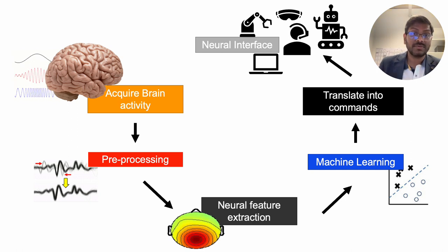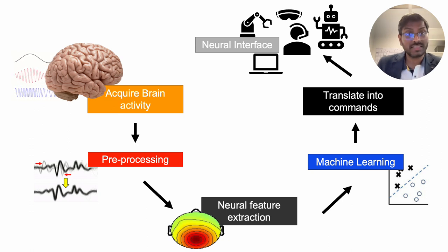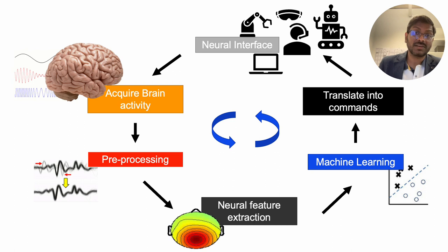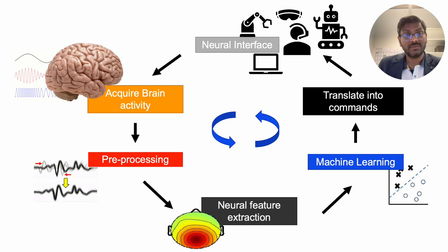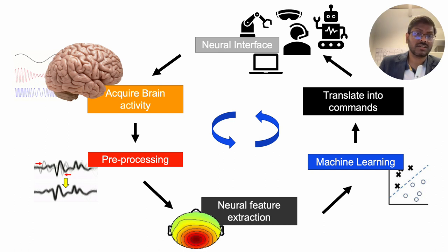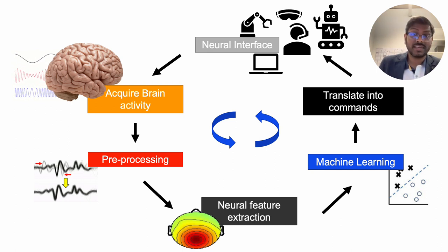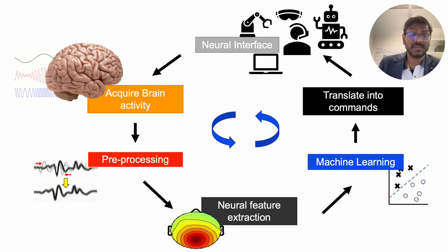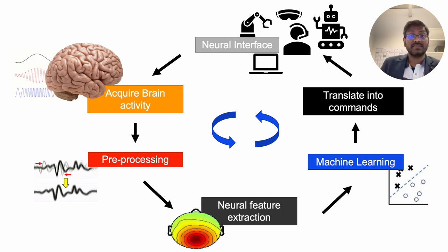Once you know that label or classification — stress in this example — you can translate it into an interface: controlling a robot, controlling a computer, AR/VR glasses, a microphone, headphone, or really anything. When you do that, you are also watching those actions, so it becomes a closed-loop interface. This is how a BCI looks. The steps are quite interdisciplinary: cognitive neuroscience domain knowledge, machine learning and computer science, and system design for the interface. That's the fun of it.